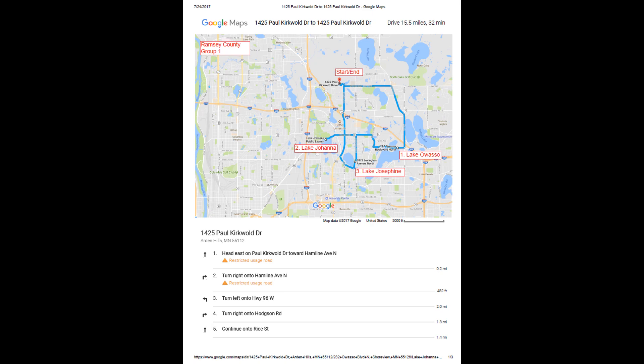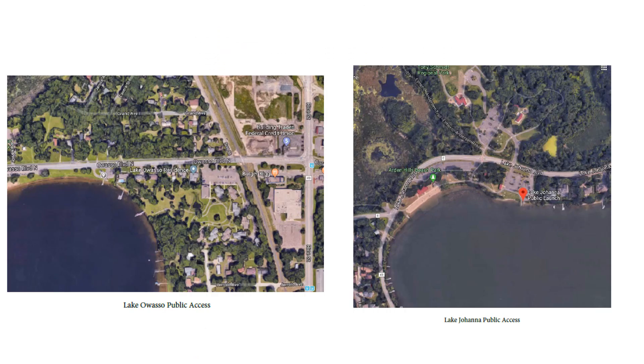Be aware that the addresses listed on the route maps are often approximations. Many public lake accesses do not have exact street addresses, so the map is designed to get you as close as possible. Once you get close, look for brown water access signs at the entrance to the access.